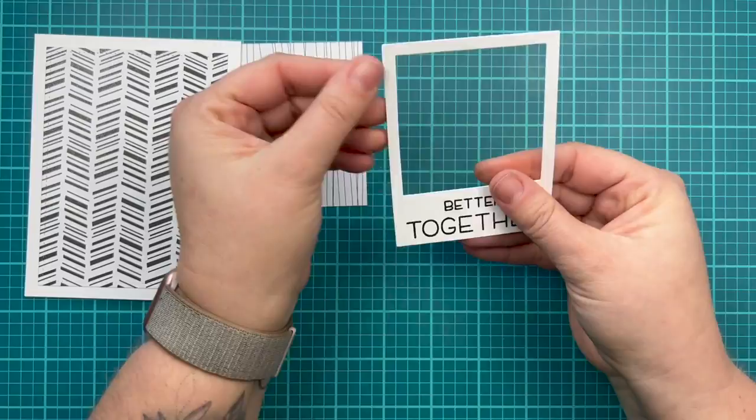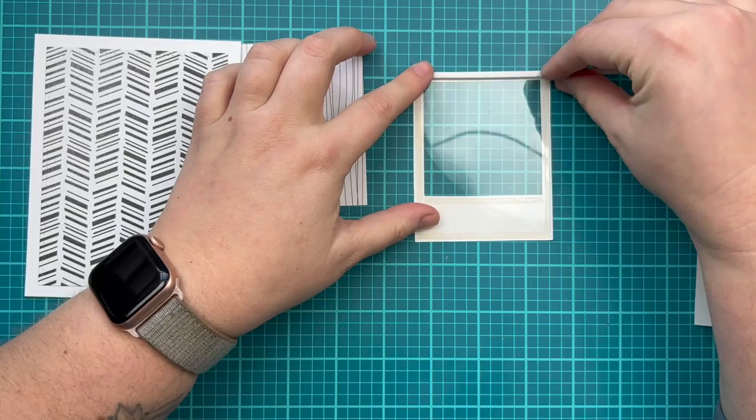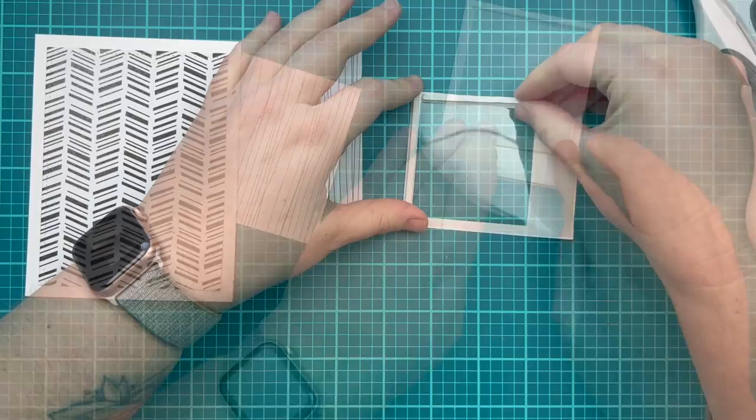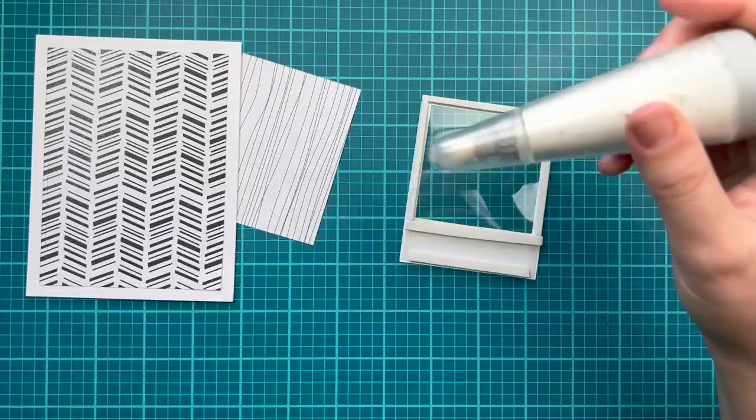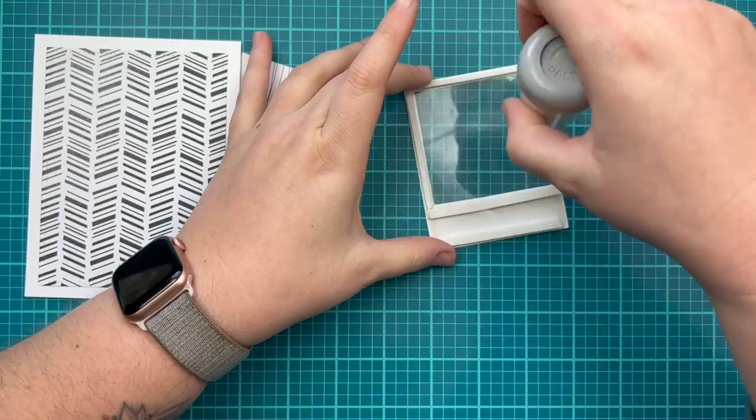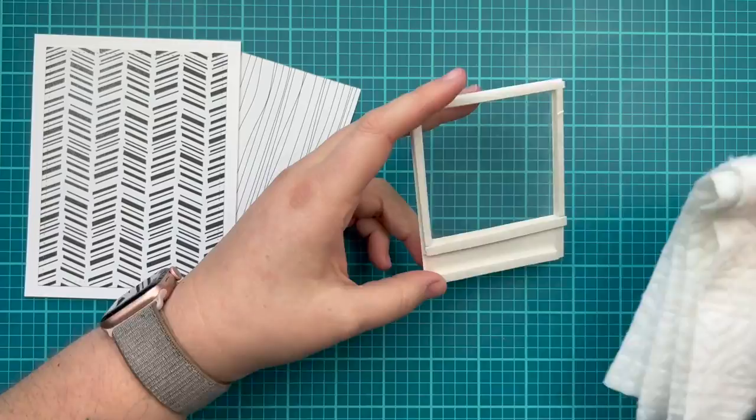Once that acetate is secure, I'm going to grab out my Heffy Doodle foam tape, which is a perfect thickness for sparkle blends because sometimes there are thicker embellishments inside. Once I get the back of my Polaroid all filled up with foam adhesive, I'm just using my anti-static powder to make sure that my piece of acetate isn't going to cause my sparkle blend to stick to the window. I want them to move around.